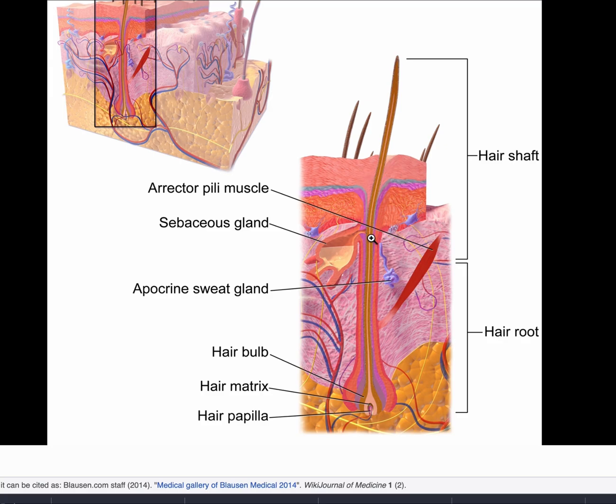And then the middle part is from the opening of the sebaceous gland to the bulge where the arrector pili muscles insert. This is called the isthmus. So this is where pilar cysts arise from. And that's why it's also called an isthmus catagen cyst.